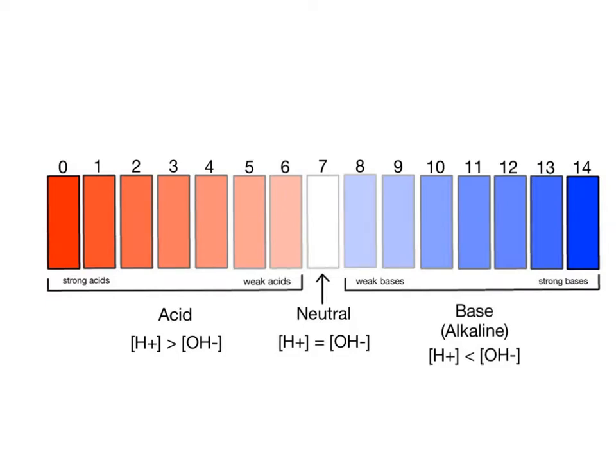We've learned that body fluids display a variety of pH values, from strongly acidic fluids such as the stomach's gastric juice, with a pH in the range of 1 to 3.